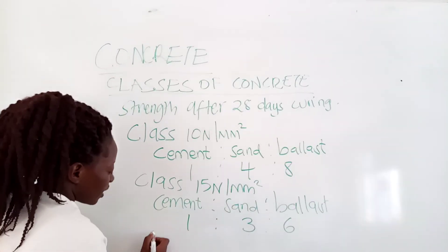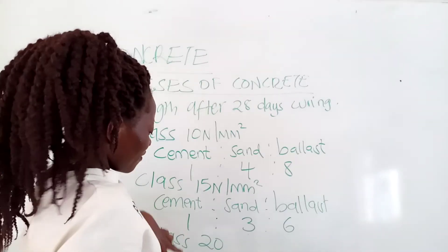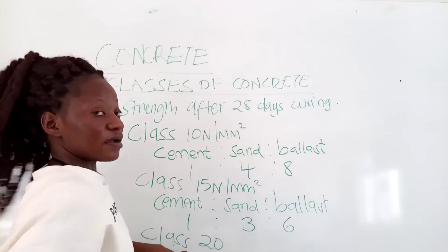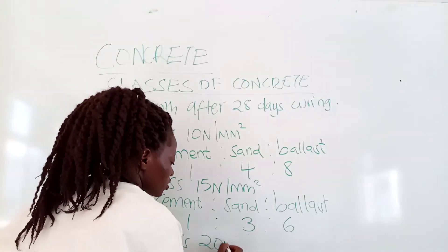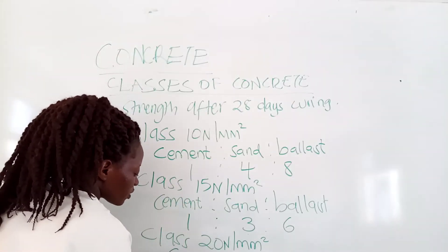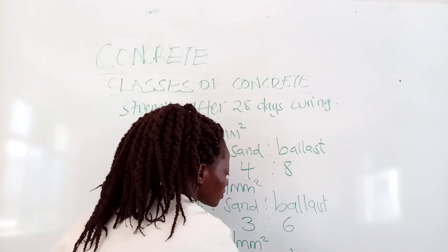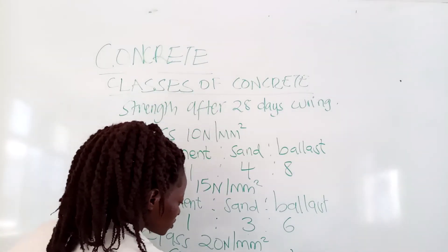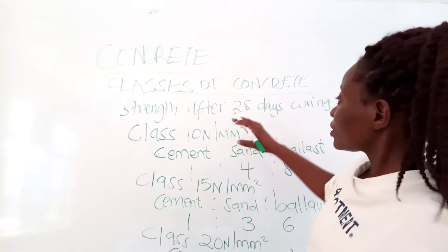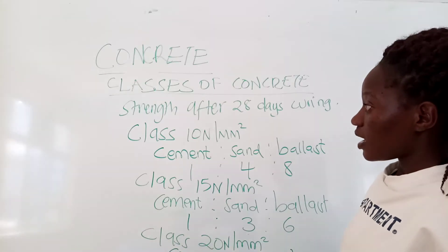Then we have Class 20. Class 20 means that after curing the concrete for 28 days, the concrete should have a compressive strength of 20 newton per millimetre squared. The ratio of cement to sand to ballast for Class 20 is 1:2:4. The higher the class, the stronger the compressive strength of concrete, because we are reducing the aggregate proportions relative to cement.